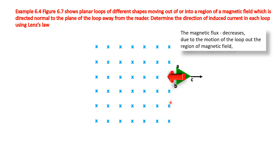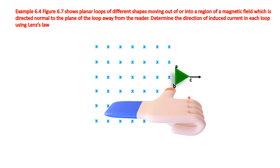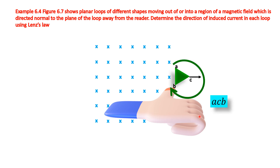Keep your right-hand thumb in the direction of the induced magnetic field and curl the other fingers. Applying the right-hand thumb rule for the induced current: if the thumb shows the direction of the induced magnetic field, the curl fingers show the direction of the induced current. Here the other fingers show a clockwise direction. So the induced current direction is A, C, B.